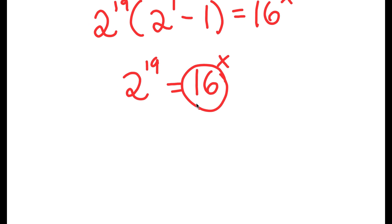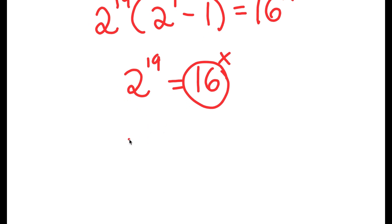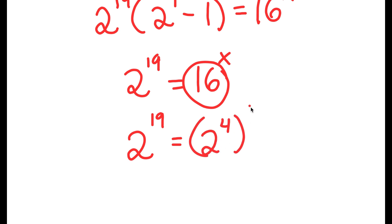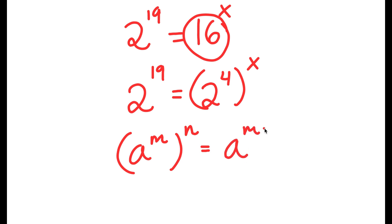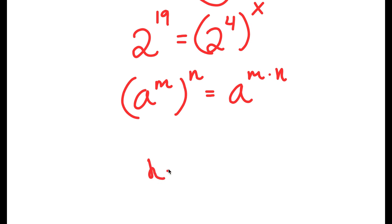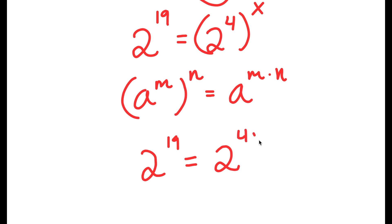Now, 16 is the same thing as 2 to the power of 4. So now I have 2 to the power of 19 is equal to 2 to the power of 4 to the power of x. And if I have something in the form a to the power of m to the power of n, this is equal to a to the power of m times n. So 2 to the power of 4 to the power of x equals 2 to the power of 4x.